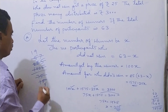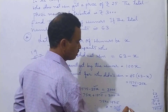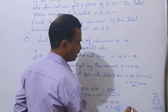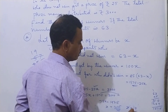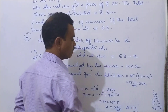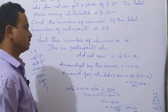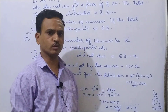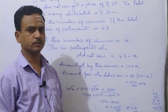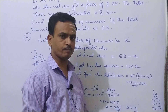Therefore, x is equal to 19. That means the number of winners is 19 members.